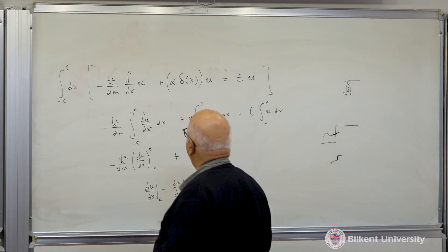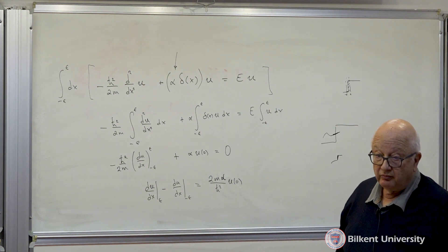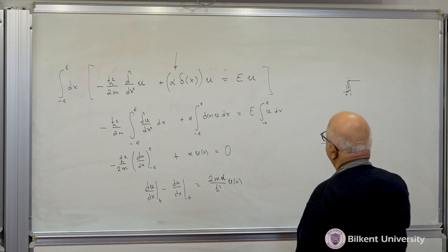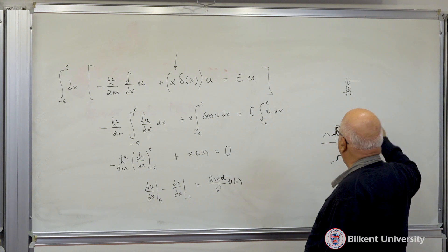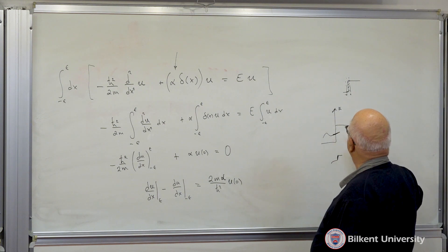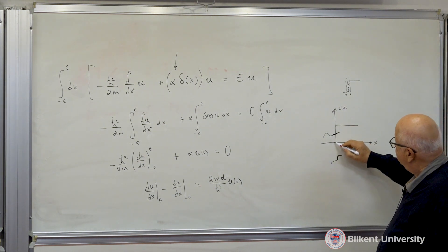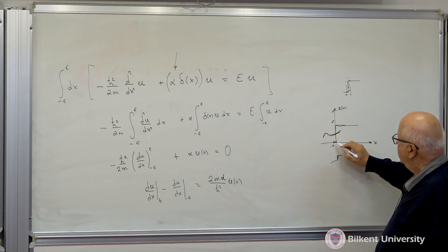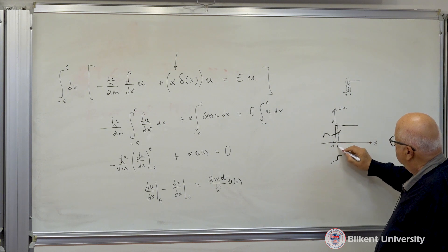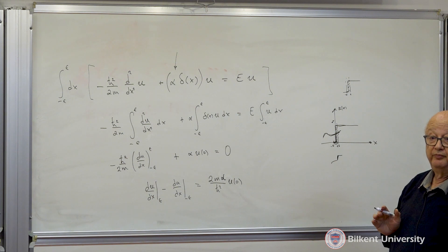This analysis of the delta function potential is important because it tells us the derivative of the wave function has to be continuous as long as you don't have a delta function. If you do have a delta function, you have a discontinuity proportional to the size of the delta function — proportional to alpha. This also justifies why we require psi to be continuous, since abrupt changes in the derivative at an interface would otherwise be unjustified.